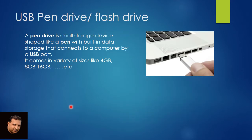Now, USB pen drive, also known as flash drive. Everybody knows what a pen drive is — it is a small storage device shaped like a pen, that is why it is called a pen drive. It has built-in data storage and connects to a computer via a USB port. The spaces where we insert a pen drive are known as ports. It comes in a variety of sizes like 4GB, 8GB, etc.